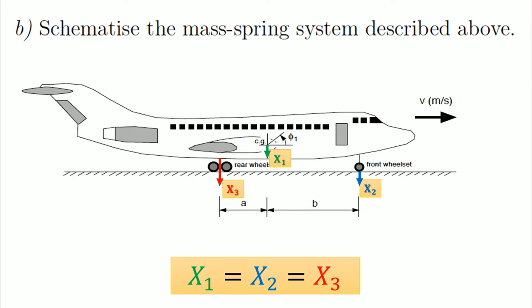In part B, I show the mass-spring system diagram in which we can see that the elongation of the front and rear wheel sets are equal and also they are equal to the total elongation of the center of gravity.